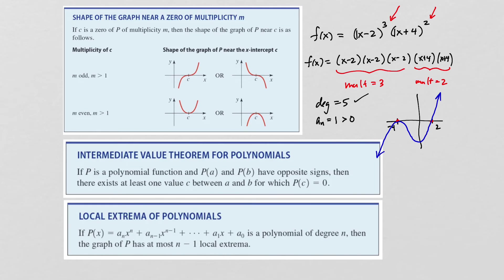The intermediate value theorem for polynomials states: if P is a polynomial and A and B are two numbers where P(A) and P(B) have opposite signs, then there exists at least one value C between A and B for which P(C) = 0. Essentially, if the polynomial is positive on one side and negative on the other, there must be some point where it crosses the x-axis between those two points.